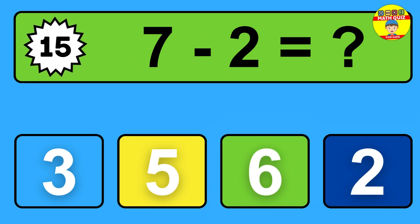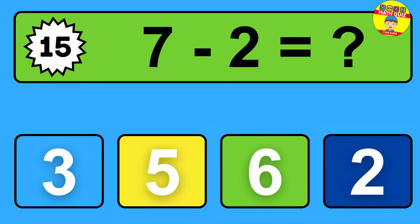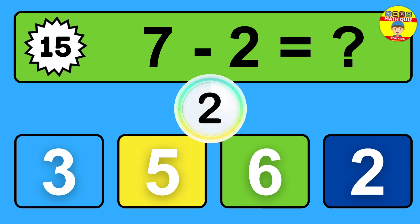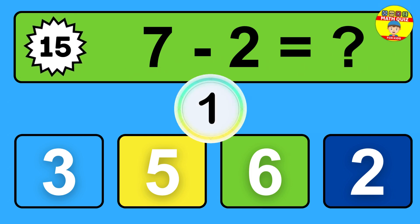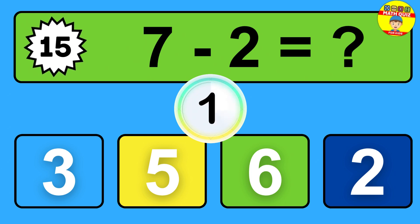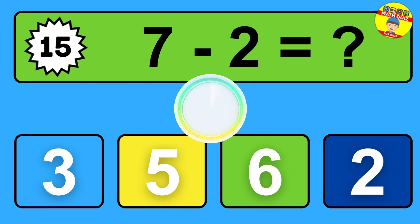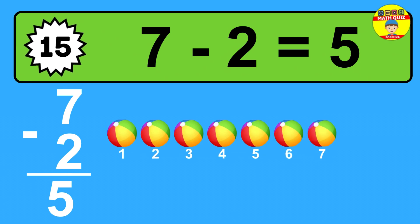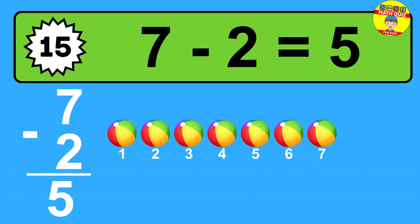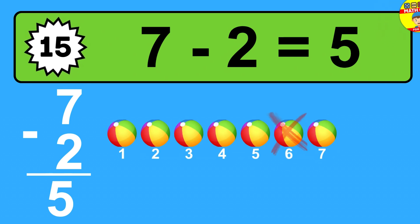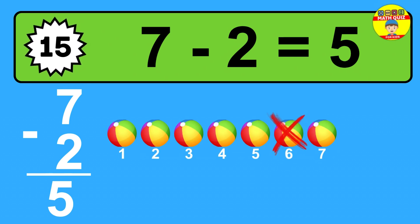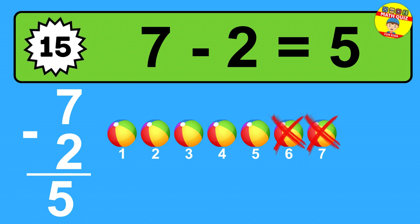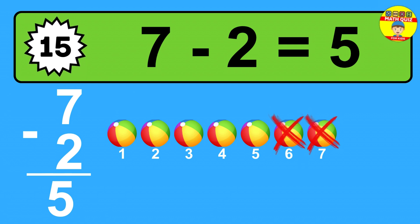Question fifteen: seven minus two equals what? The answer is seven minus two is five. Let's count it: one, two, three, four, five.